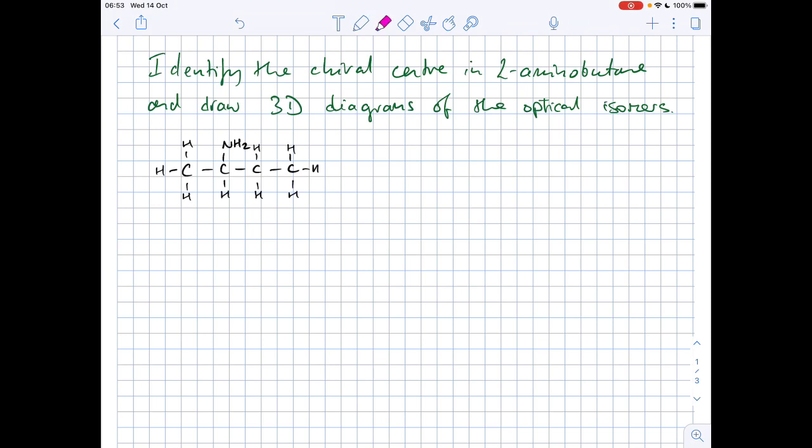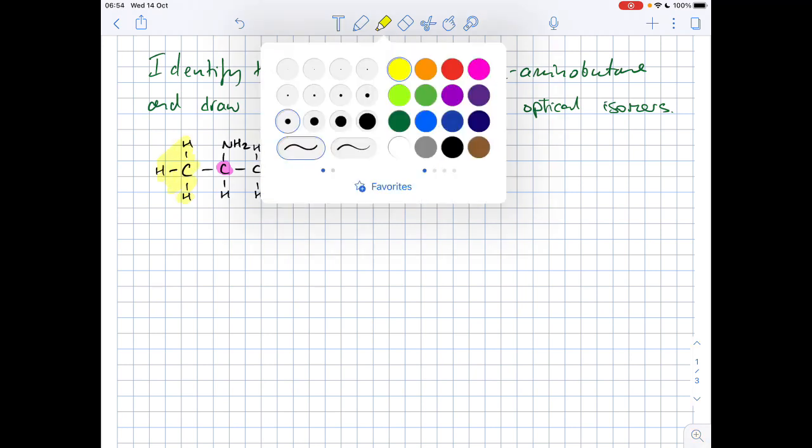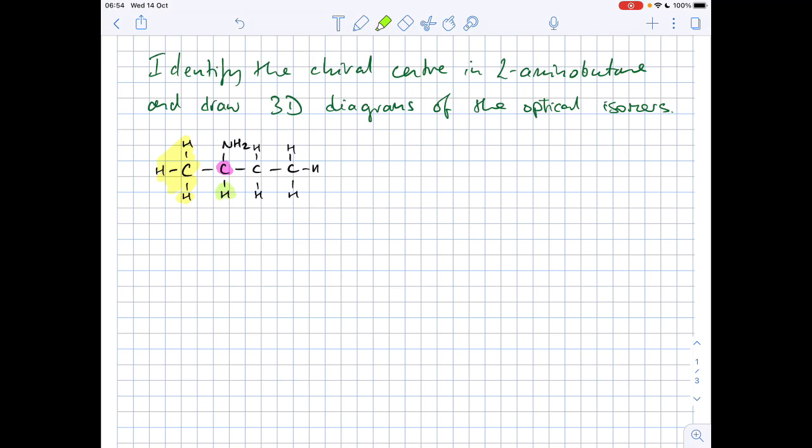Now we've got that, we can identify the chiral centre. We're looking for a carbon atom with four different groups attached. So it's this carbon here. What have we got on here? We've got a methyl group, a hydrogen, an NH2 group, and an ethyl group. So we've got four different groups attached to that pink carbon. That's your chiral carbon.